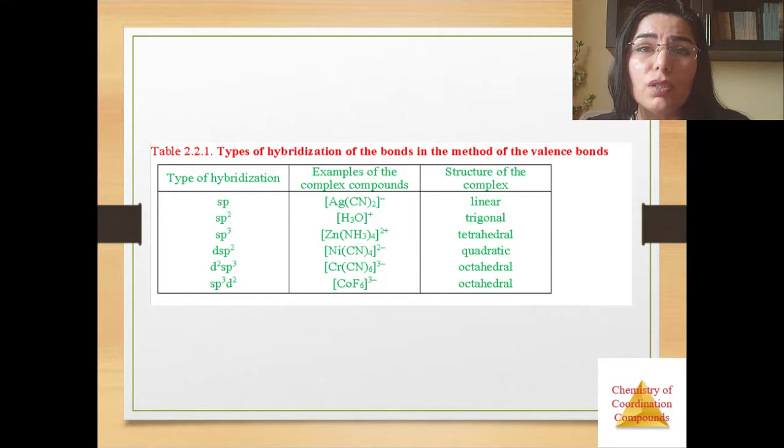You see here SP type of hybridization, example of the complex is argentium cyanide, and structure of the complex is linear. Then SP2, trigonal, example H3O. When the type of hybridization is SP3, it's like this: zinc ammonia 4, and type structure of complex is tetrahedral. Then like this, DSP2 is quadratic. D2SP3, octahedral. And SP3D2, octahedral. You see here examples for each type.